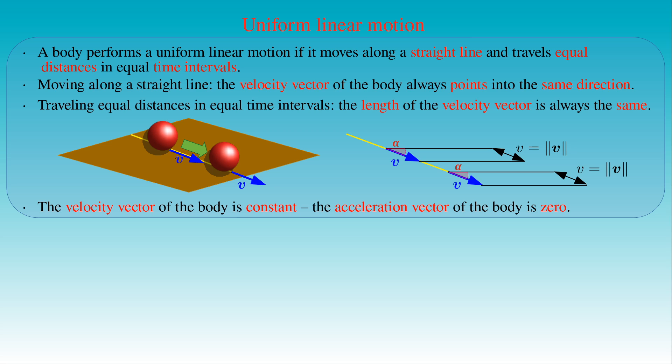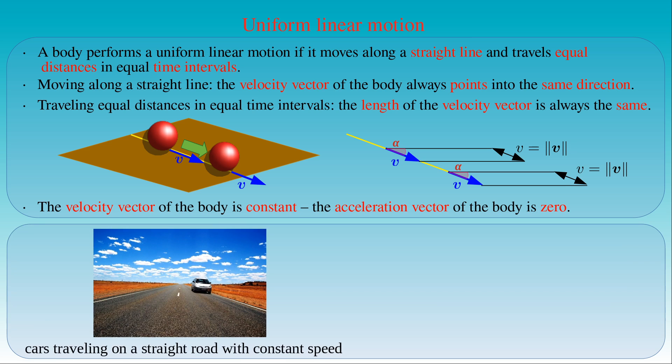A typical example of uniform linear motion is a car traveling on a straight highway with a constant speed. The engine provides the mechanical power to keep the vehicle moving forward. At the same time, the engine also needs to overcome the aerodynamic drag and friction between the tires and the road. This demonstrates the everyday experience that we normally need some external effect to move a body with a constant speed along a straight line.